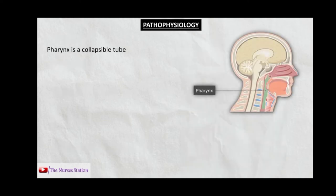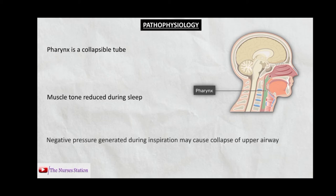Naturally, the pharynx is a collapsible tube. When we sleep, the tone of the muscles in the body is reduced. When we inhale, there is generation of negative pressure. This negative pressure can cause collapse of the pharynx and can cause obstructive sleep apnea.